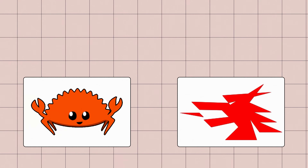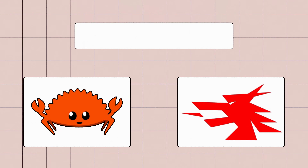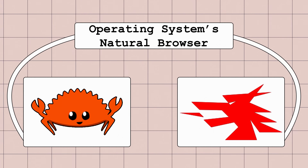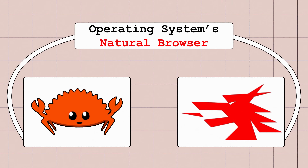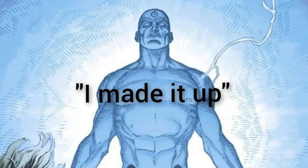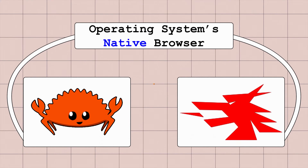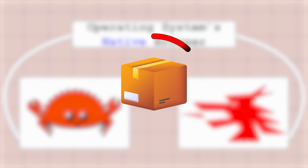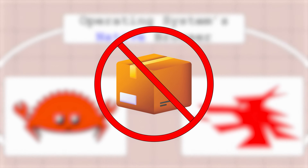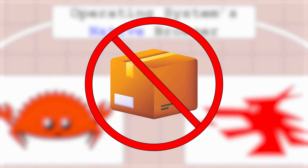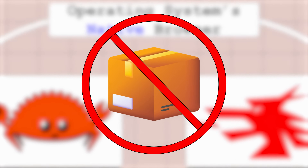Something like Wails and Tauri — they use your operating system's native browser. And because it uses your OS's native browser, it doesn't have to package anything, but you still get the advantage of building a web app. So let's open up GoLand.